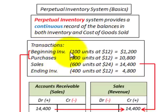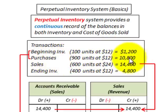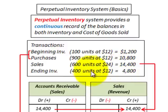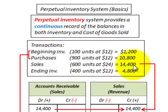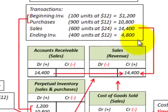Here are some transactions for the period. We're going to have a beginning inventory of $1,200 with a cost per unit of $12 each. Then we'll have purchases for the period of $10,800, sales for the period of $14,400, and ending inventory per our books of $4,800. Let's look at how we'd do our transactions with this perpetual inventory system.